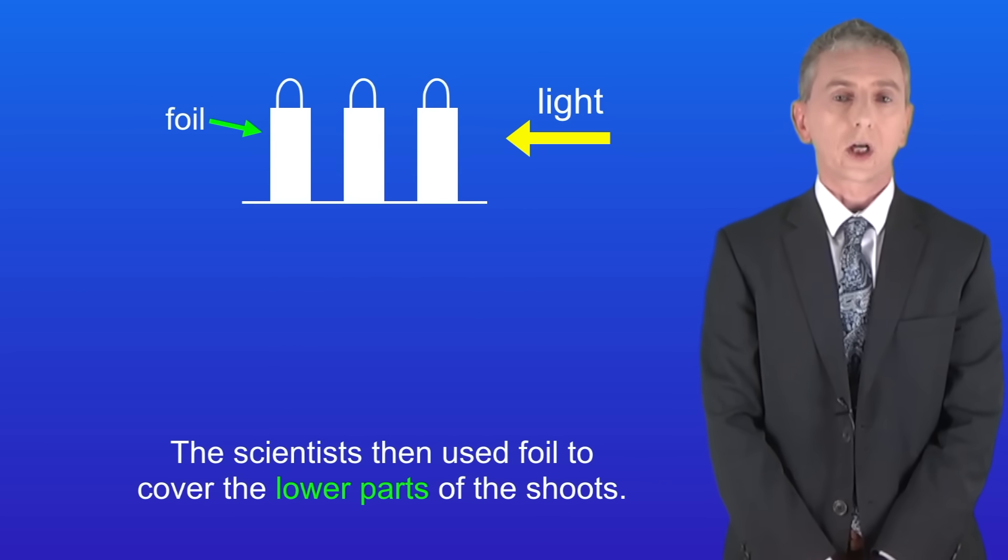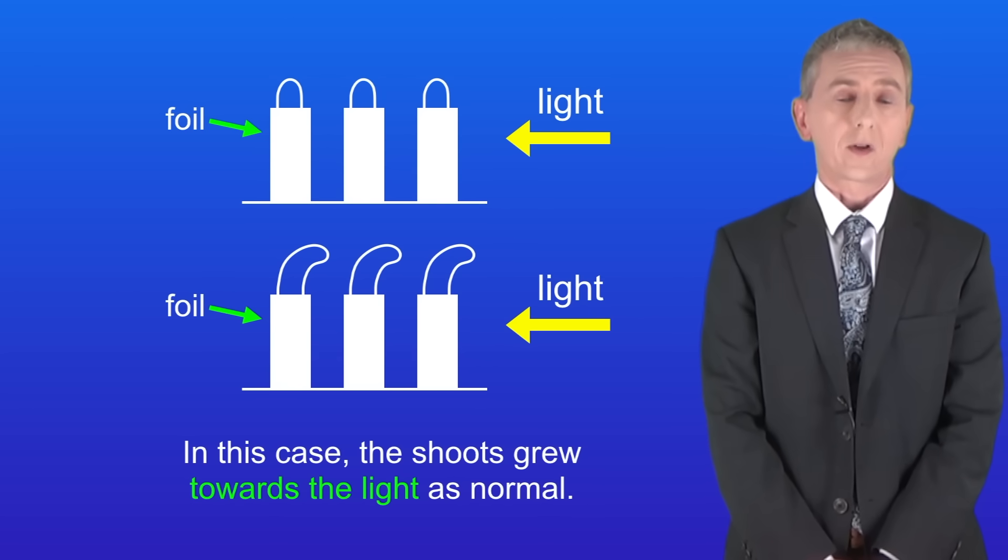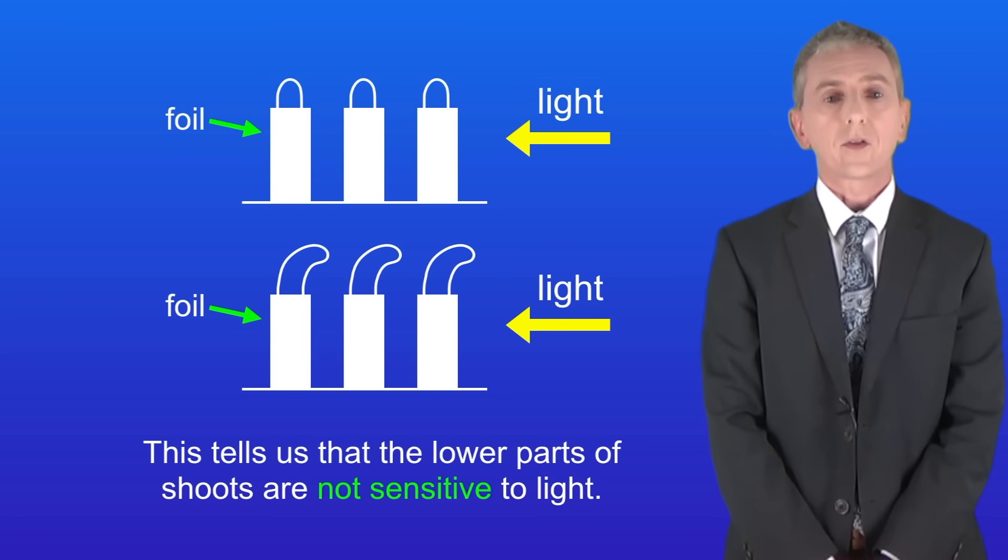The scientists then use foil to cover the lower parts of the shoots, and in this case the shoots grew towards the light as normal. So this tells us that the lower parts of shoots are not sensitive to light.